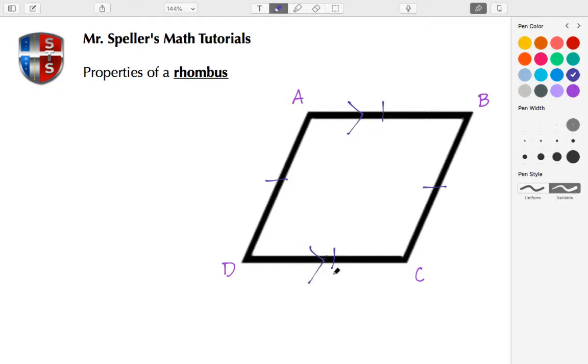And a double arrow on these opposite sides here. We also know that opposite angles are congruent, so angle D is congruent to angle B. We also know that angle A is congruent to angle C.